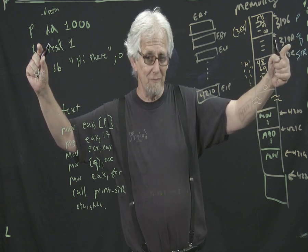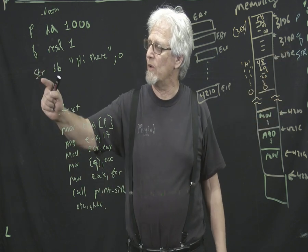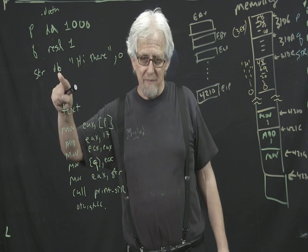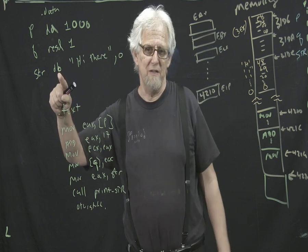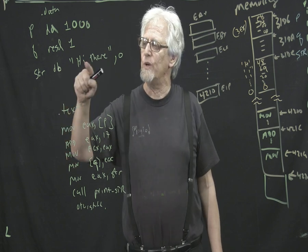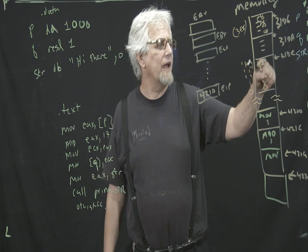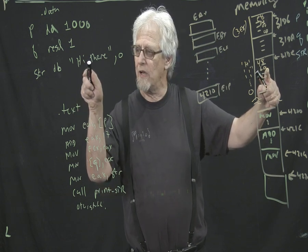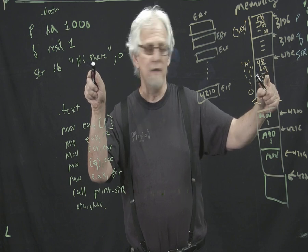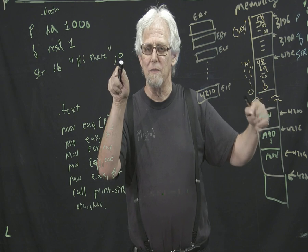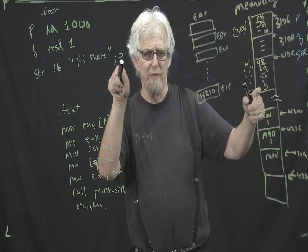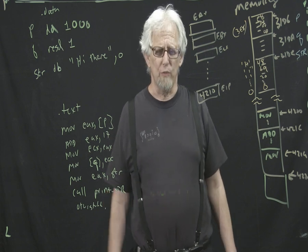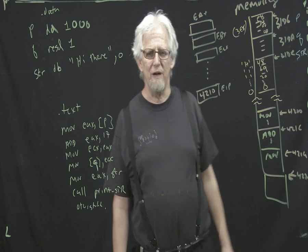And then we're going to have a variable called STR, which is a string. Again, this is just a label pointing to a spot in memory. And this is DB, meaning we're making bytes, not 4-byte D-words. We can put a string here and each one of these is one byte. A capital H is 0x48, a lowercase i is 0x69, a space is 0x20, and then more characters. The last thing we put here after the string is a 0.